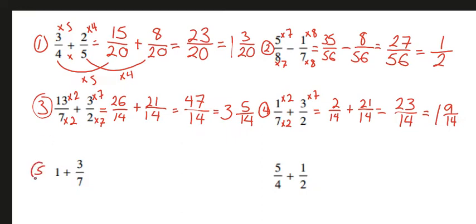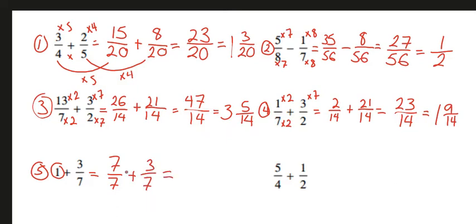For number 5, we have 1 plus 3 over 7. Whenever we have a whole number, we can write it with a denominator and multiply that number by the denominator to get the numerator. So since this number is 1, we're going to multiply it by 7 to get 7 as our new numerator, plus 3 over 7. 7 plus 3 is 10 over 7, and this is going to be 1 and 3 over 7.